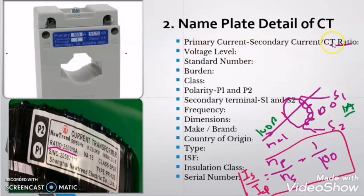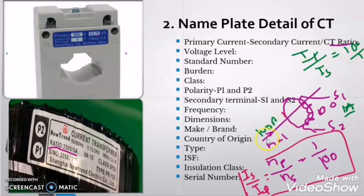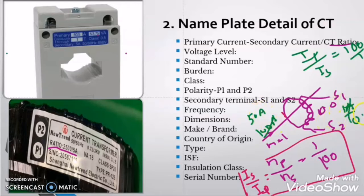So what is CT ratio? CT ratio is the ratio of primary current divided by secondary current. So here we can say that this CT has a ratio of 100 by 1. Because whenever there is 100 Ampere of current flowing through the primary winding — which is the conductor whose current needs to be measured — then there is 1 Ampere of current flowing through the secondary winding. But suppose now only 50 Ampere current is flowing through the primary winding, then there will be only 0.5 Ampere of current flowing through the secondary winding.